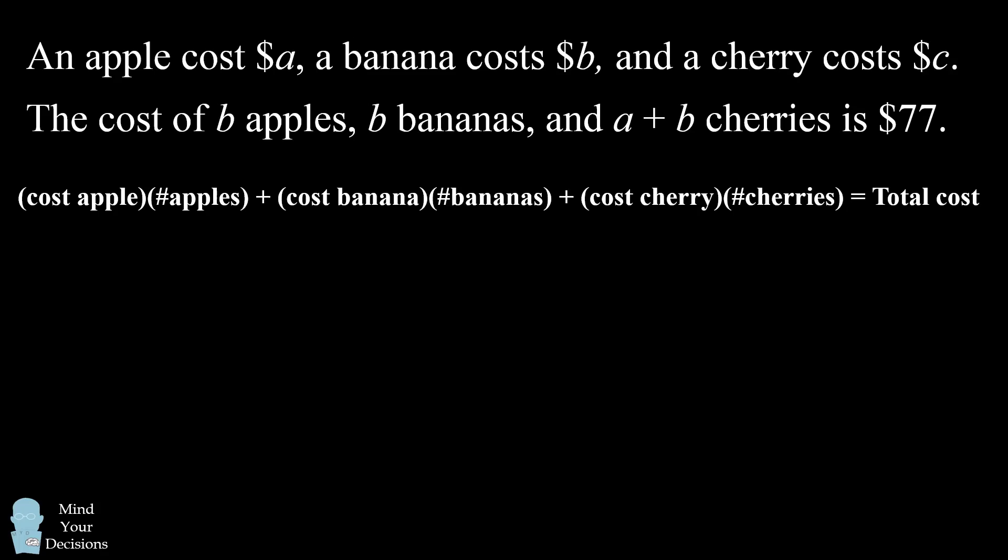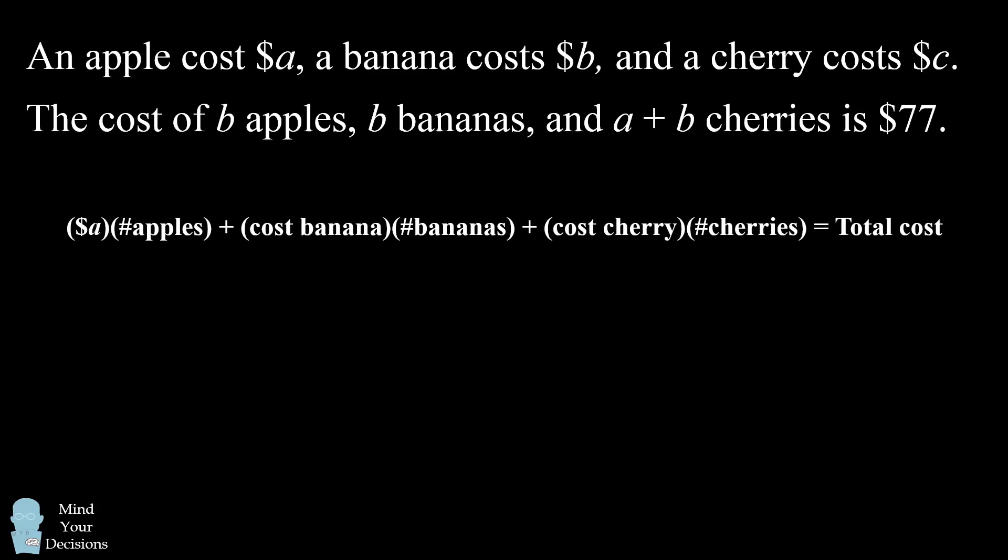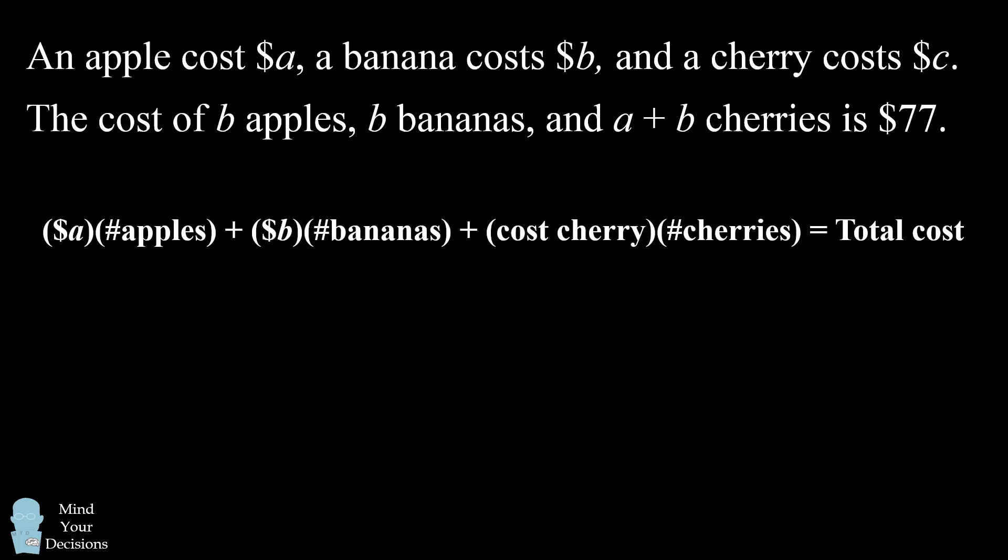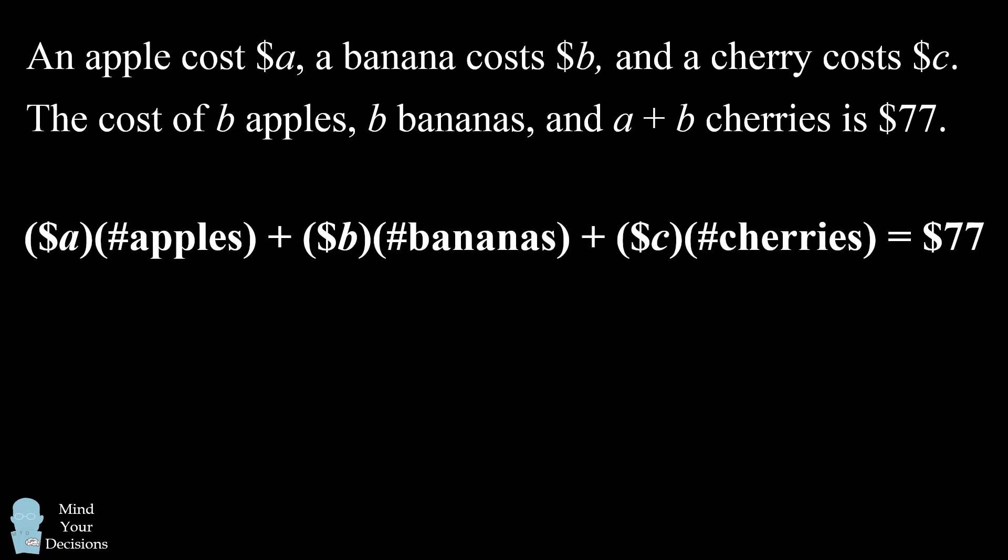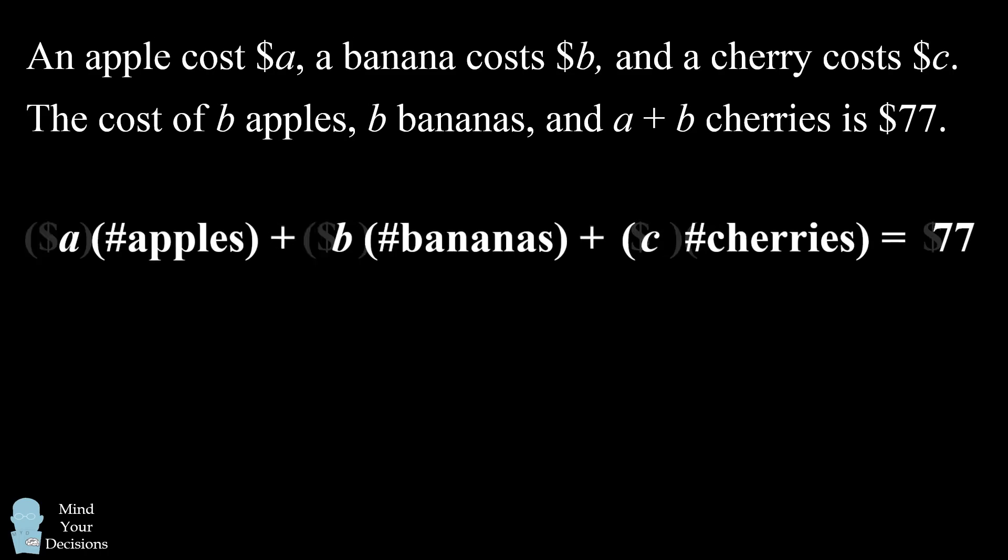We know that an apple cost A dollars, a banana cost B dollars, and a cherry cost C dollars. Furthermore, we know the total cost is 77 dollars. To make this a little easier to read, I'll remove the dollar signs.